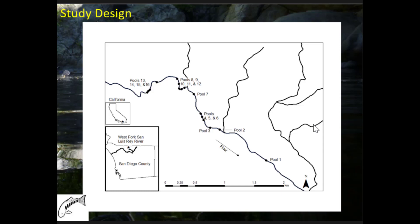Through initial snorkeling work, we identified 16 perennial pools that were deep enough and held water, plus sections with pockets of water we could also target. We staged a vehicle at the bottom, got dropped off at the top, hiked down to pool 16, and began setting traps around 1500. We baited each trap with approximately 15 pieces of cat food, placed it in the deepest portion of the stream, tied it to a nearby tree, and let it sit overnight to catch as many nocturnal black bullhead as possible.